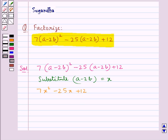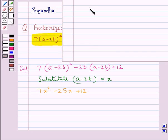Now we can factorize this expression by splitting the middle term. We need to find two numbers such that their product equals 12 × 7 = 84 and their sum equals -25.